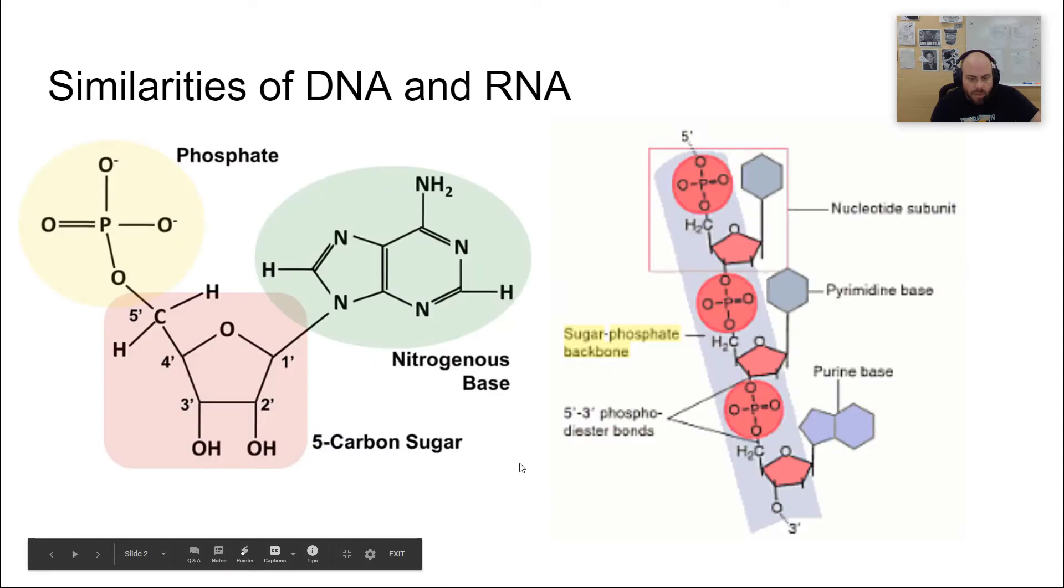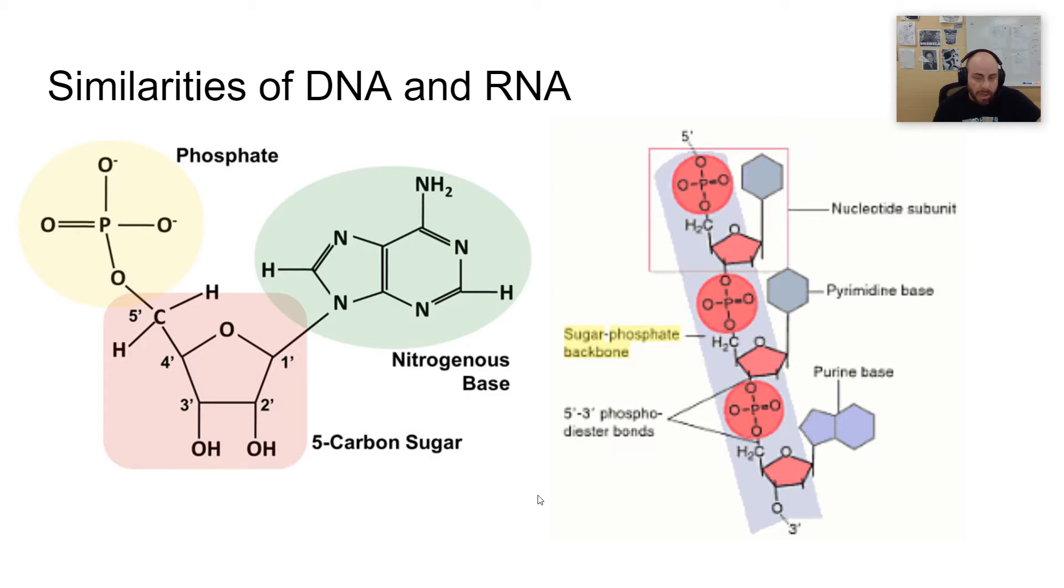And so first, we'll look at the similarities between RNA and DNA. Again, both of these are nucleic acids, so by definition they're composed of individual subunits called nucleotides, and each one of those nucleotides is made of a 5-carbon sugar, a nitrogenous base, and a phosphate group, and you can see that very clearly here. Remember, nitrogenous bases need nitrogen just by their name, and phosphates obviously need phosphorus, and so this DNA molecule needs not only carbon but phosphorus and nitrogen in order to be made.